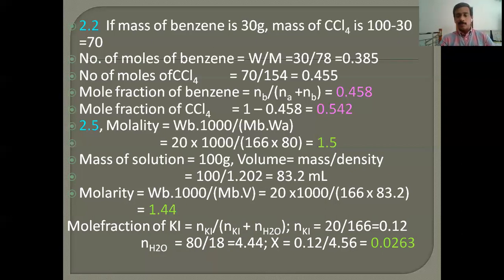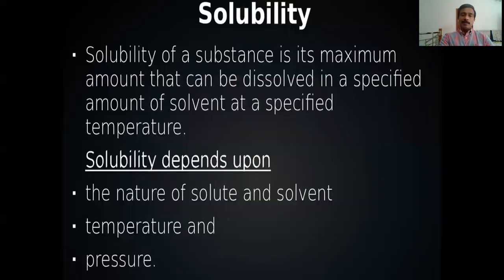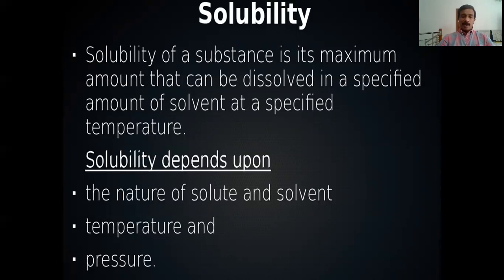You can solve a number of such problems — the calculation of concentrations is very important. Now, solubility: solubility of a substance is the maximum amount that can be dissolved in a specified amount of solvent at a specific temperature. If you fix the temperature and volume, the solvent can dissolve a particular maximum amount — that is its solubility.